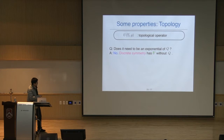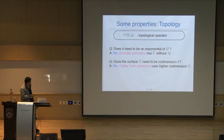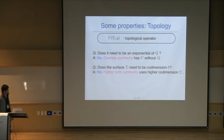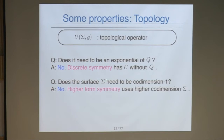Next question: does this surface need to be codimension one? In the case of usual symmetry, we integrate the current over a time slice, which has codimension one (dimension D−1). But what is called higher form symmetry uses higher codimension σ. I will discuss the details of these higher form symmetries in later lectures.